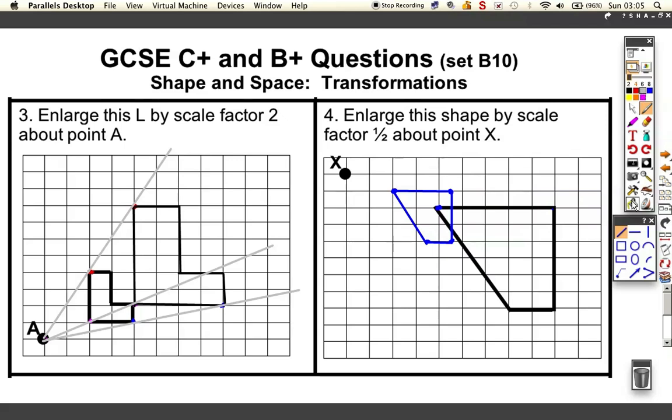I could draw the ray lines in just to see whether I've got it in the right place. The corners are all in line as well. So I've got the blue shape. It's half the size and half the distance from our center of enlargement.